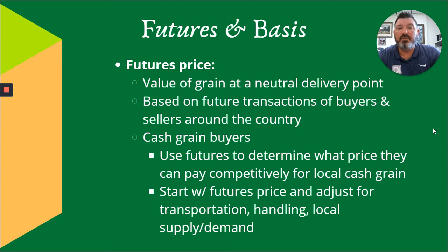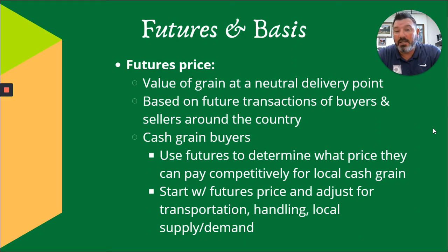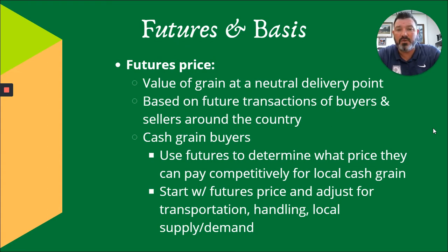Futures price by definition is the value of grain at a neutral delivery point. Grain is traded actively on the Chicago Board of Trade. It's important to point out that there are no grain elevators — no place to dump grain at the Chicago Board of Trade in downtown Chicago, nor at other trading sites like the Kansas City Board of Trade, which is the main wheat trading site. So futures prices represent the value of grain at a neutral delivery point, based upon futures transactions of buyers and sellers across the country. Cash grain buyers use futures to determine what price they can pay competitively for local cash grain. We start with the futures price and adjust for transportation, hauling, and local supply and demand — that's how you get your local cash price.